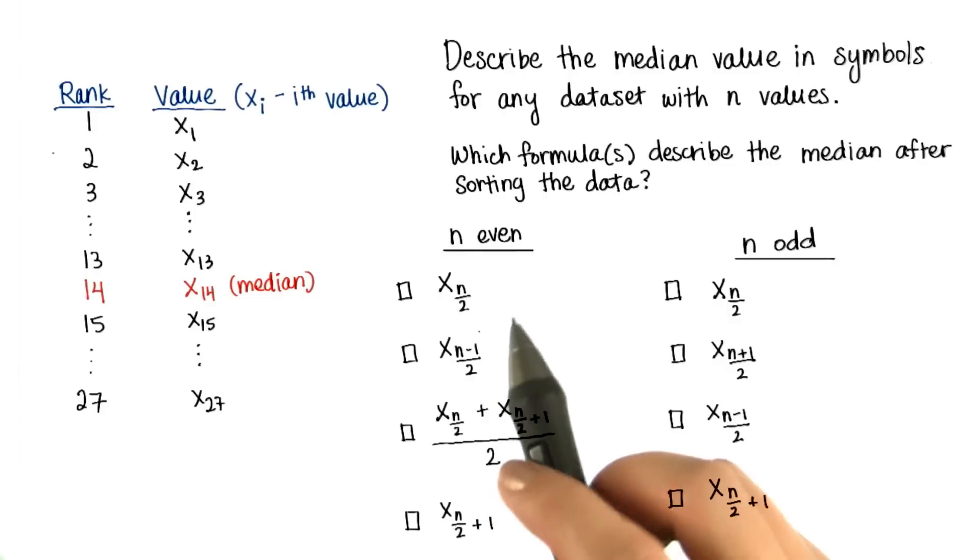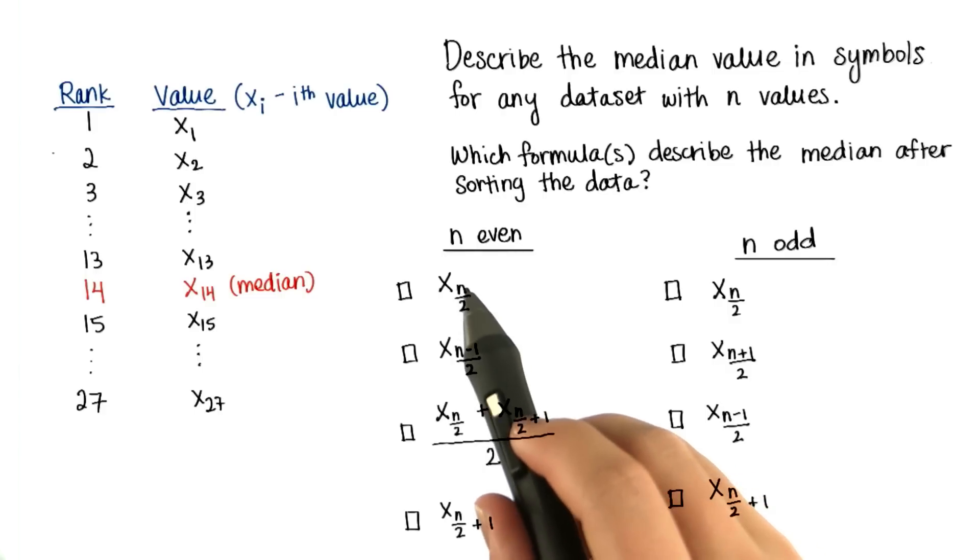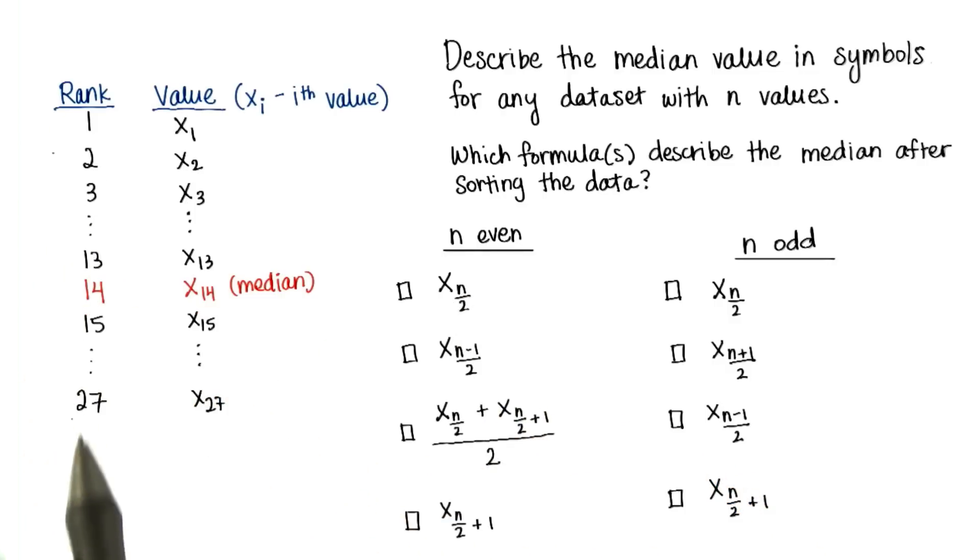Now really quick, this might look daunting, but just remember that this subscript part corresponds to the rank. So for example, say there are four values in the data set. n divided by 2 means 4 divided by 2, which is 2.